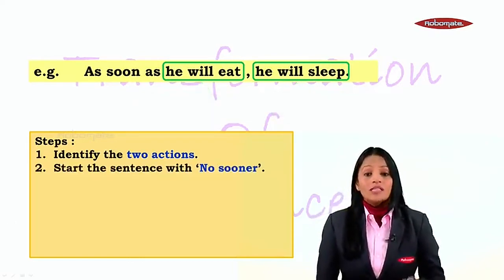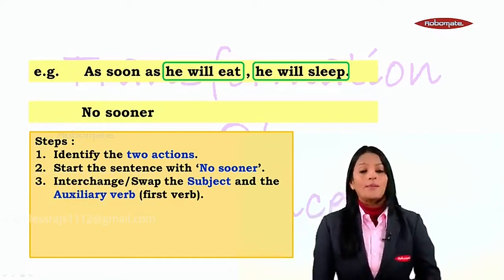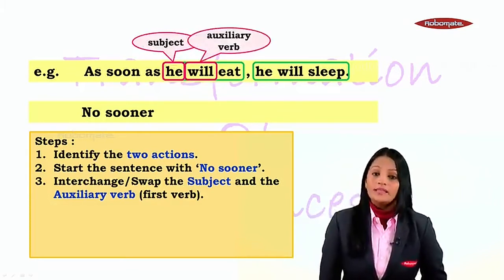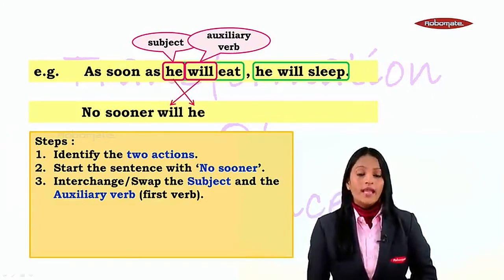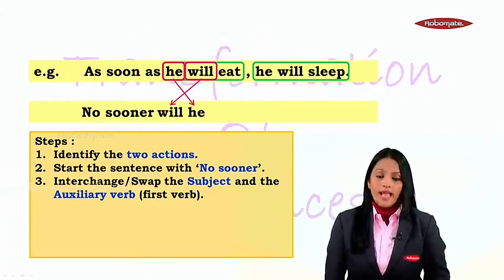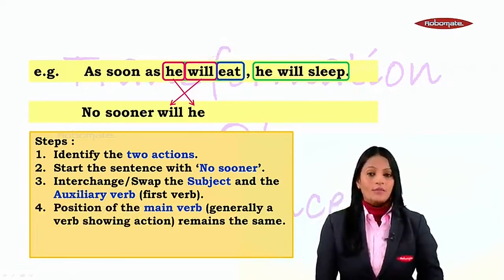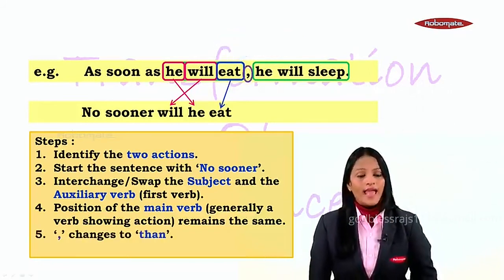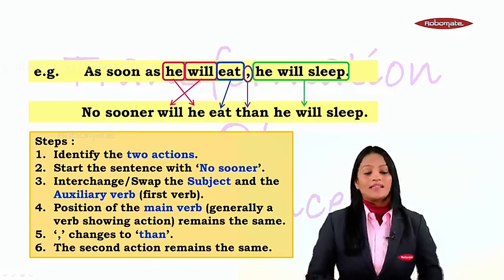Next, start the sentence with 'no sooner.' Then interchange or swap the subject and the auxiliary verb. 'He' is the subject, 'will' is the auxiliary verb, and 'eat' is the main verb. So instead of 'he will,' it gets swapped and becomes 'will he.' So we have 'no sooner will he,' and then 'eat' remains as 'eat.' The comma becomes 'than,' and the second action will remain as it is.